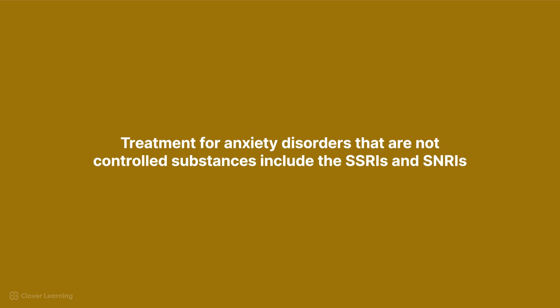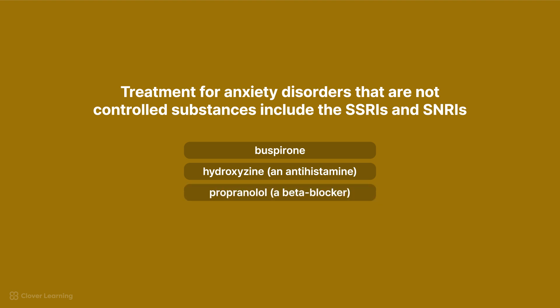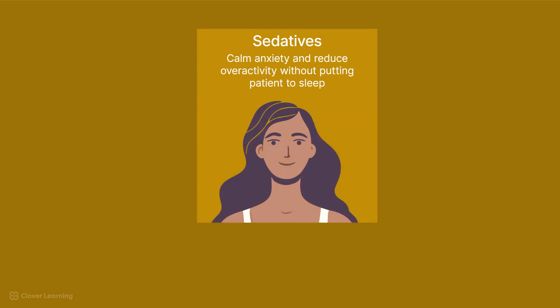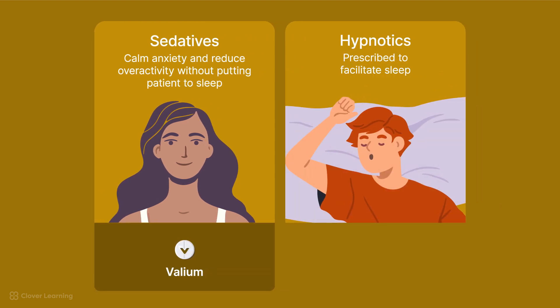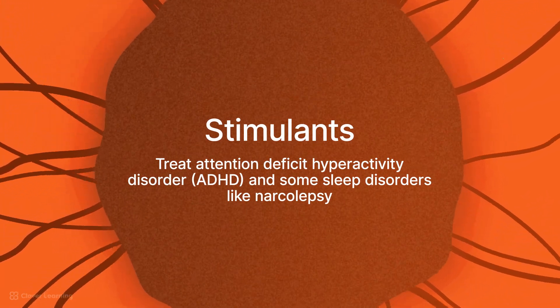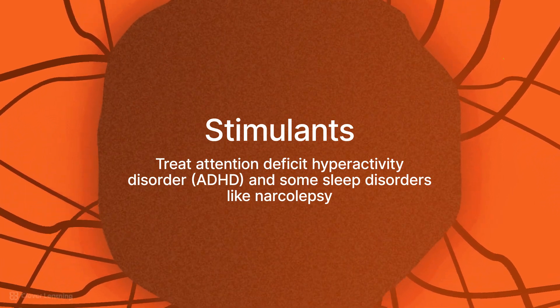Other non-controlled medications for anxiety include buspirone, hydroxyzine (an antihistamine), propranolol (a beta blocker), and pregabalin. It is important to note that sedatives are prescribed to calm anxiety and reduce nervous system overactivity without putting the patient to sleep, like Valium, whereas hypnotics are prescribed to facilitate sleep, like Ambien.